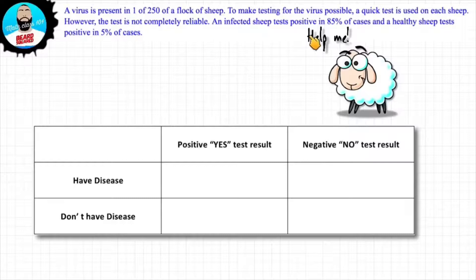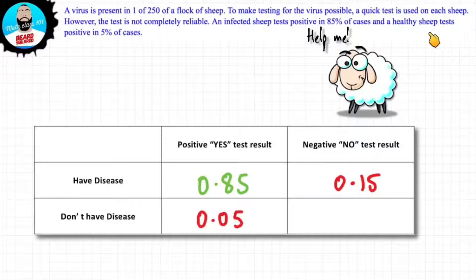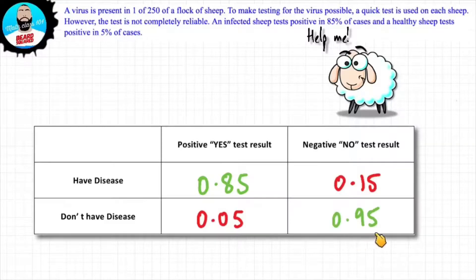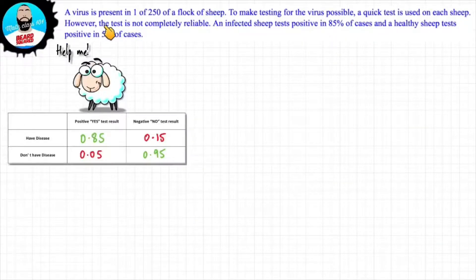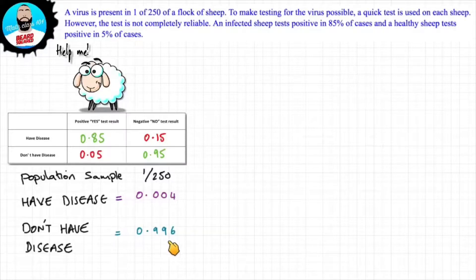Now let's make sense of some of these percentages. An infected sheep tests positive in 85% of cases, and a healthy sheep tests positive in 5% of cases. So an infected sheep tests positive 85% of the time, which means the remainder — 0.15 or 15% — will test negative. And a healthy sheep tests positive in 5% of cases, so if you're healthy and you have a positive test result it's 0.05, meaning 0.95 or 95% will test negative. Now we haven't yet taken into consideration what percentage of the population are actually infected. Considering a virus is present in one of 250 sheep, we can say that 0.004 have the disease, and 0.996 don't have the disease.